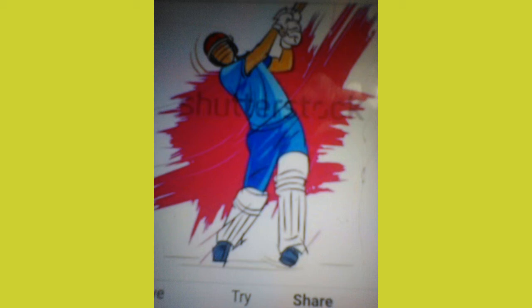Also at No. 3: Jawaharlal Nehru Stadium, capacity 60,000, located in Kerala. No. 4: DY Patil Stadium, capacity 55,000, located in Maharashtra. Also at No. 4: MCI Pune International Cricket Centre, capacity 55,000, located in Maharashtra.